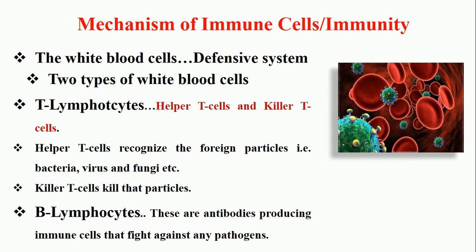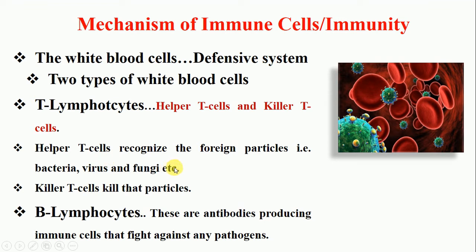The two types are T lymphocytes and B lymphocytes. Both develop in the bone marrow, but T lymphocytes mature in the thymus, a glandular structure of lymphatic tissue located outside the bone marrow. T lymphocytes have two types: helper T cells and killer T cells. Helper T cells recognize or identify foreign particles such as bacteria, viruses, and fungi, while killer T cells destroy those recognized particles.